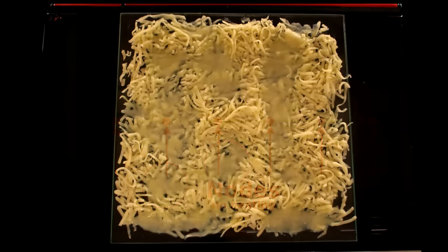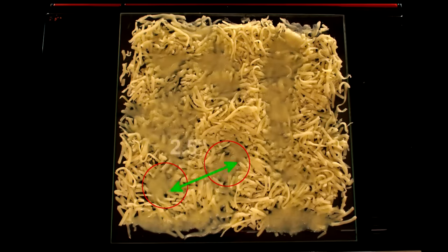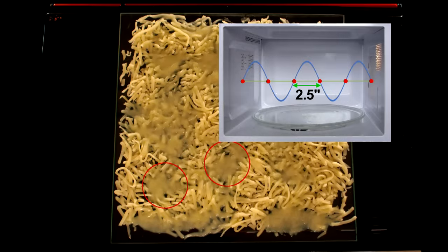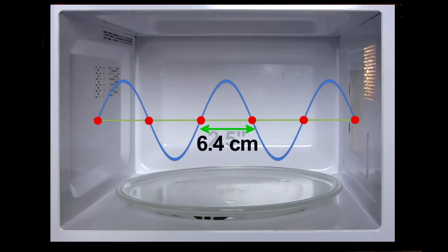If I measure the distance between melted cheese spots, I find about two and a half inches. That would be half the wavelength, the distance between nodes, and is pretty close to the actual wavelength of microwave radiation used.